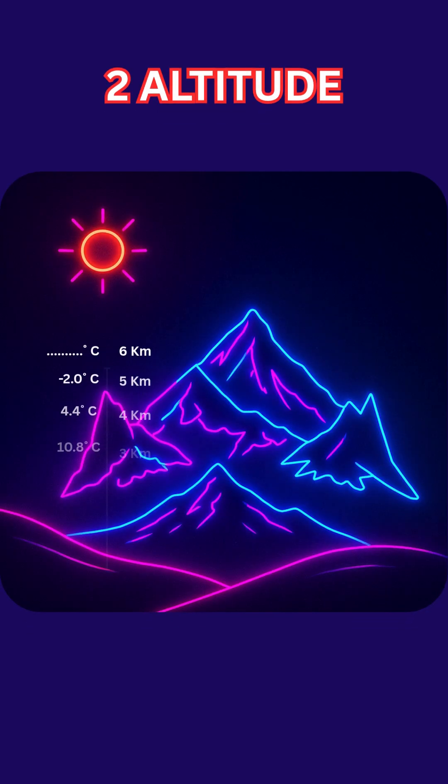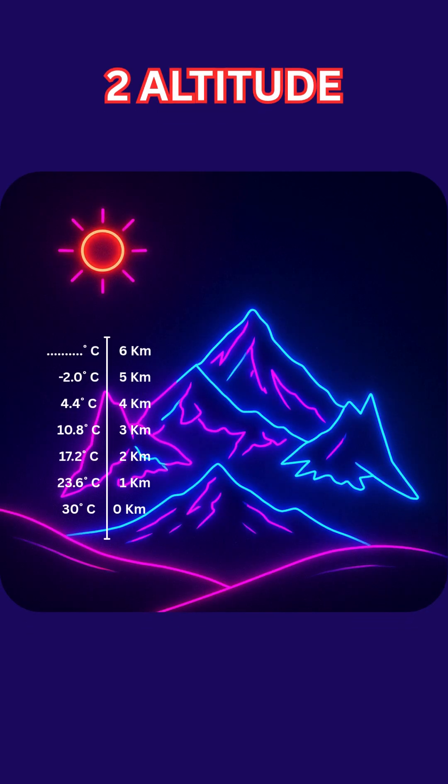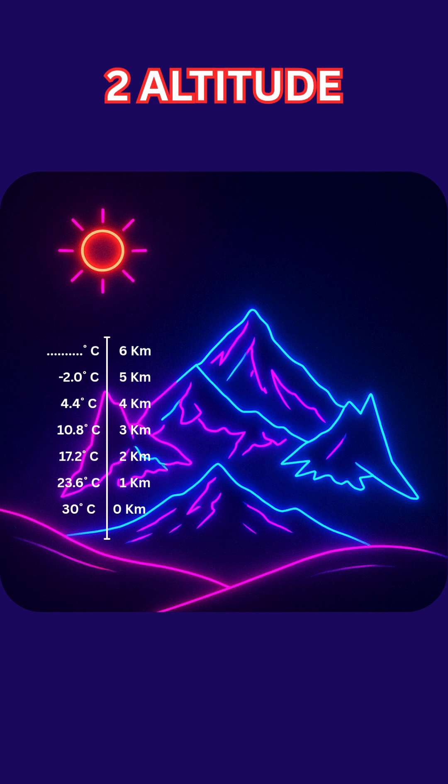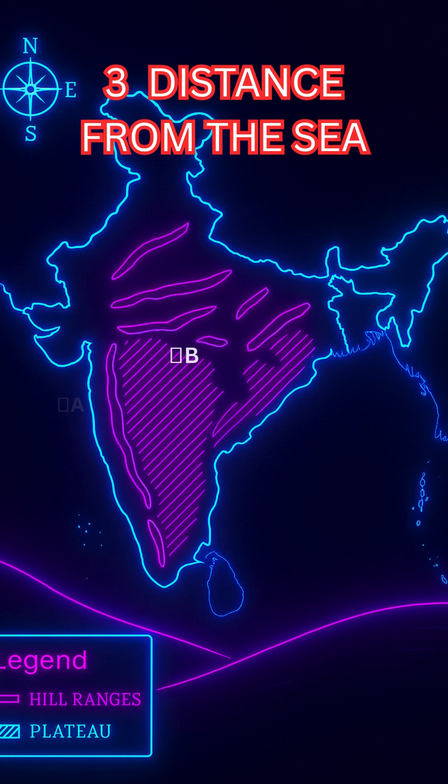Second, Altitude. Atmospheric temperature gradually decreases with increase in altitude. The phenomenon of gradual decrease in temperature at the rate of 6.4 degrees Celsius per kilometer of altitude is termed as Normal Lapse Rate.